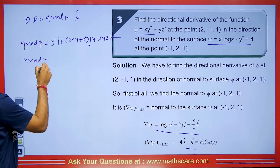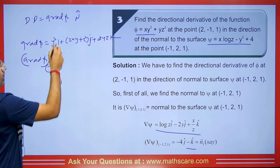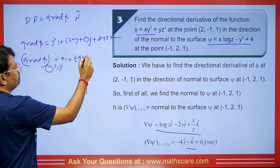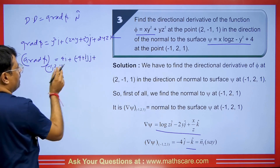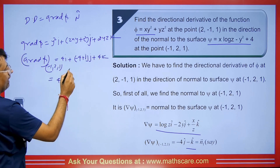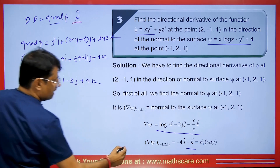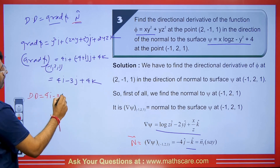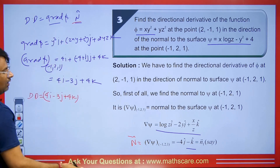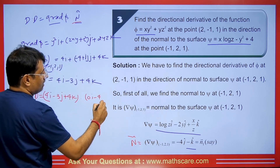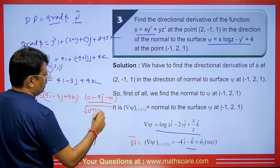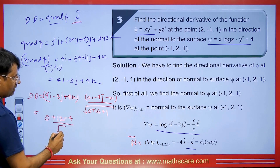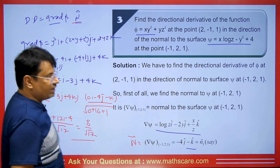At the point (−1, 2, 1), the gradient of phi gives 4i + (−4 + 1)j + 4k = 4i − 3j + 4k. For the n̂ direction, we have 0i − 4j − k divided by root(0 + 16 + 1) = root 17. The directional derivative is (4i − 3j + 4k) · (−4j − k)/root 17. Using i·i = j·j = k·k = 1, this gives (0 + 12 − 4)/root 17 = 8/root 17.